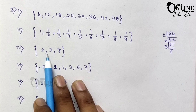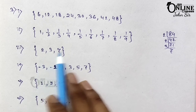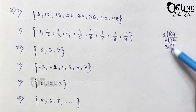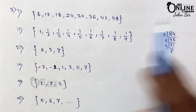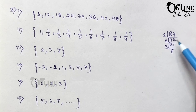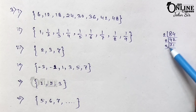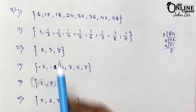Number 3: x such that x belongs to N and x is a prime factor of 84. The factors of 84 are 2, 2, 3, and 7. In roster form, you cannot repeat a number, so the prime factors are 2, 3, and 7. Write down 2, 3, and 7.